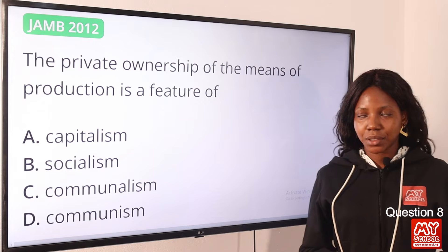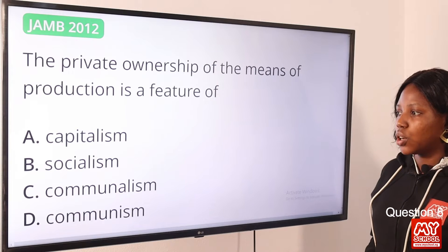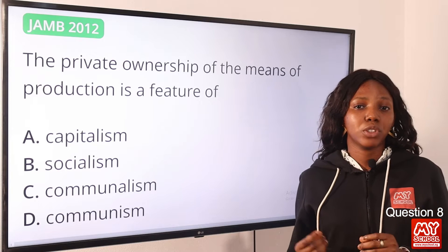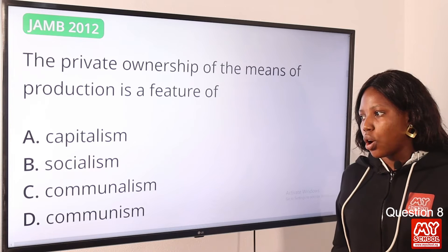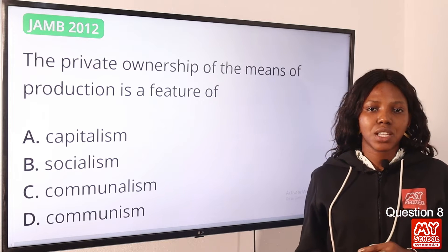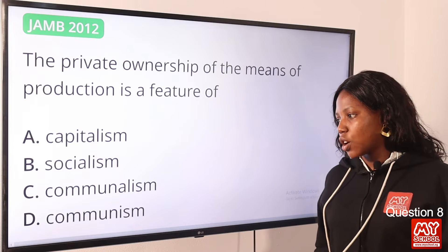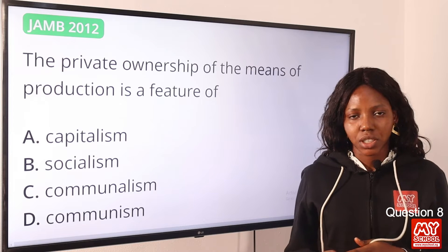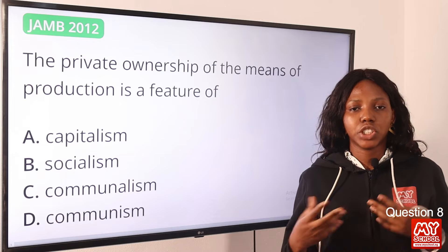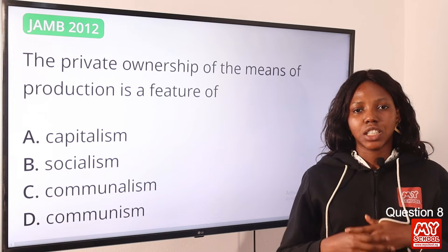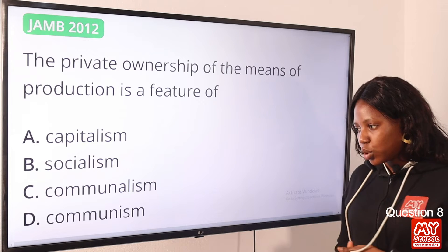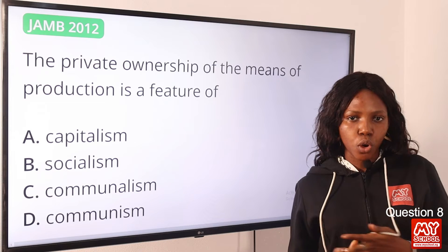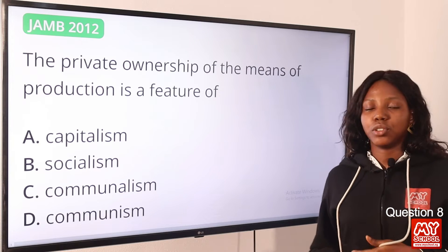Question 8: The private ownership of the means of production is a feature of — the answer is option A, capitalism. Capitalism recognizes the private ownership of the means of production and its distribution. Socialism recognizes state ownership of the means of production. Communalism involves collective ownership of landed properties and natural resources managed by the community. Communism means common ownership of the means of production with equal distribution. The answer remains option A, capitalism.